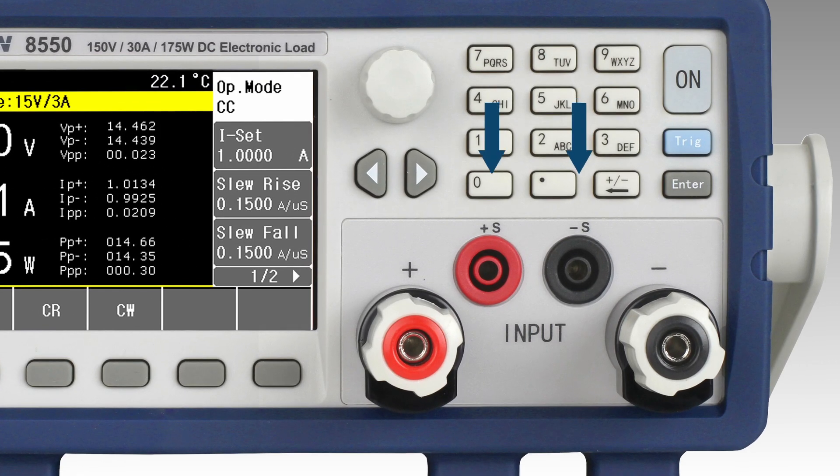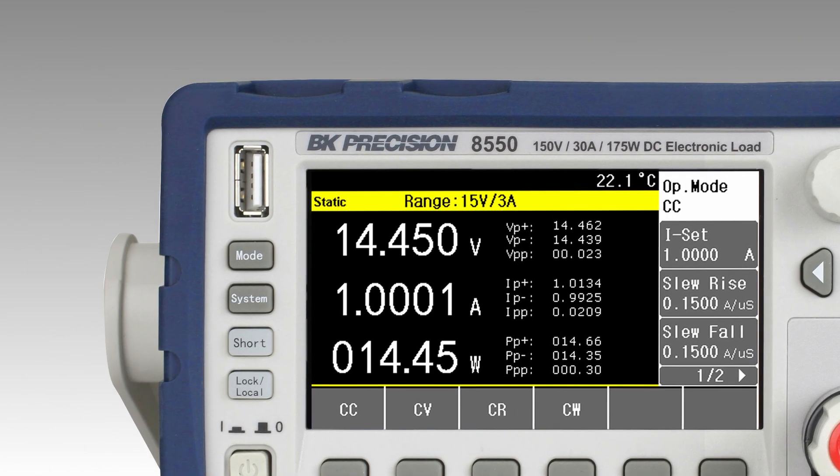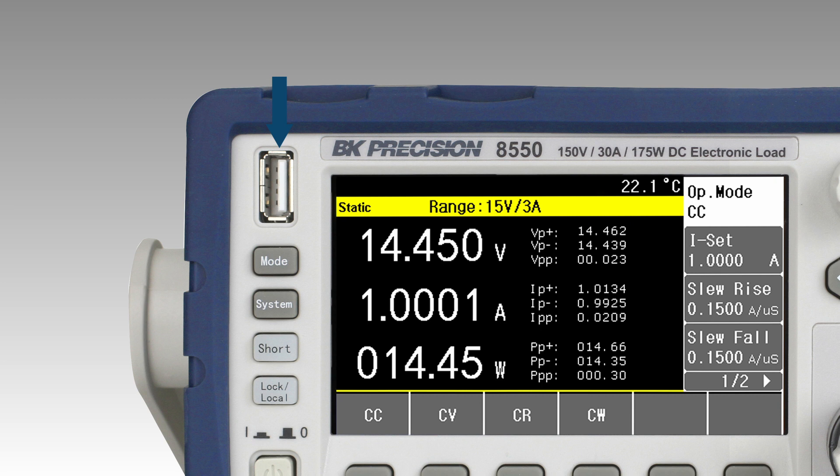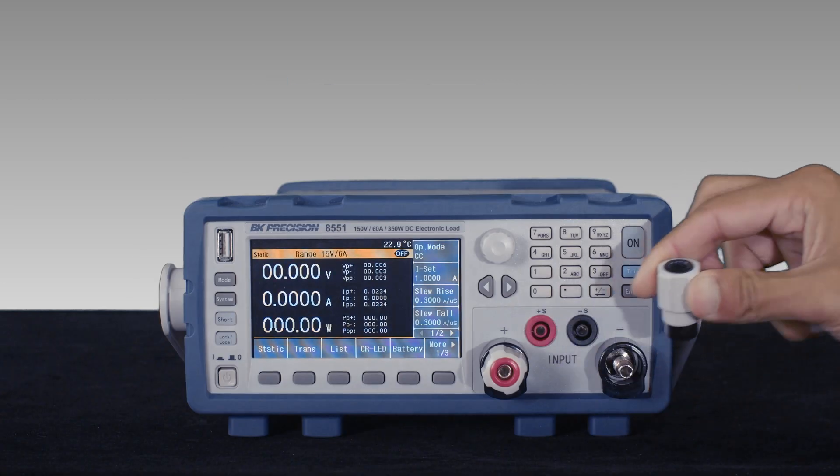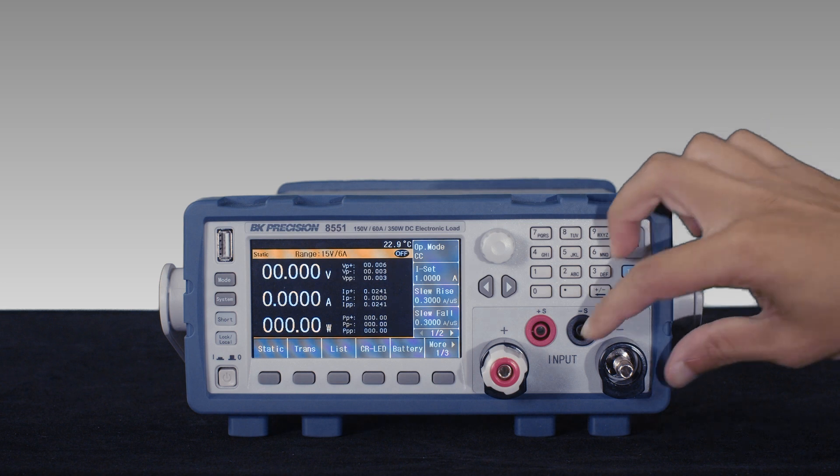Sense terminals are conveniently located directly above the input to compensate for voltage drops introduced by test lead resistance. The USB host port enables data logging directly to a connected flash drive, and removable safety shields provide added protection.